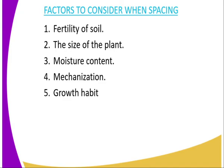The fourth factor is mechanization of the farm. If you know that you will use a machine to carry out farming operations, it requires wider spacing to allow the path through which the machine will be passing — for example, when spraying and also when weeding.